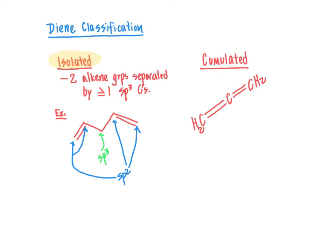If we look at the hybridization of the carbons at the end of this system — and by the way, those hydrogens could also be R groups, and this molecule could be larger than just three carbons — those two carbons at the end are going to be sp2 carbons. The one in the middle, counting the number of regions of electron density, has two regions of electron density and no lone pairs, so it's going to be an sp hybridized carbon. The accumulated diene therefore has sp2 carbons on the edges and an sp carbon in the middle.